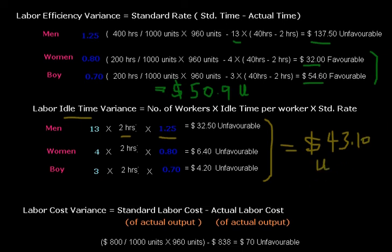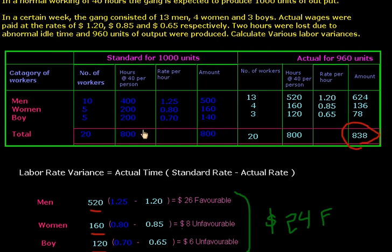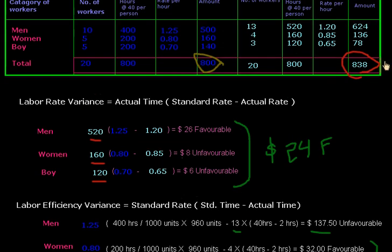Finally, we calculate the labor cost variance by applying the formula: standard labor cost of actual output minus actual labor cost of actual output. We take the standard cost of standard output, which is $100 as shown in the table, divide by the standard output, and multiply by the actual output, then subtract the actual cost of actual output.